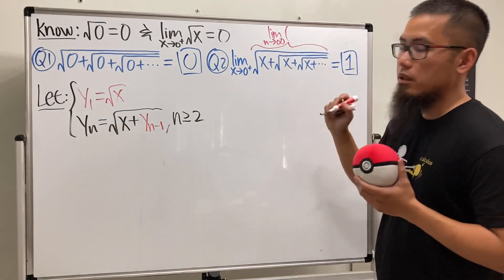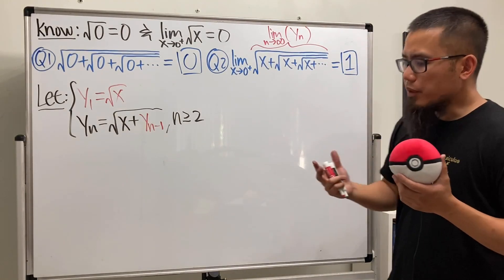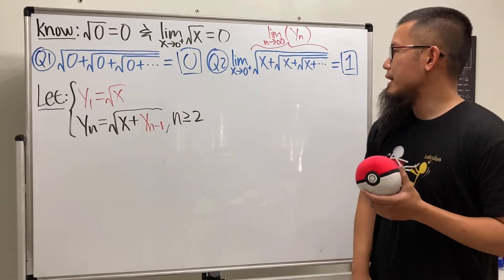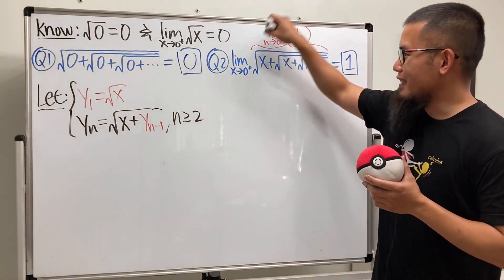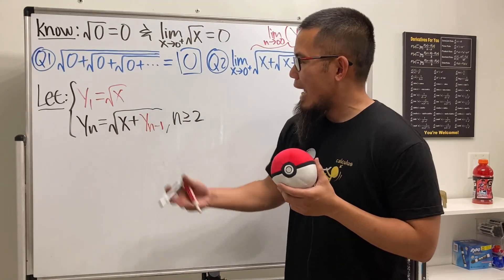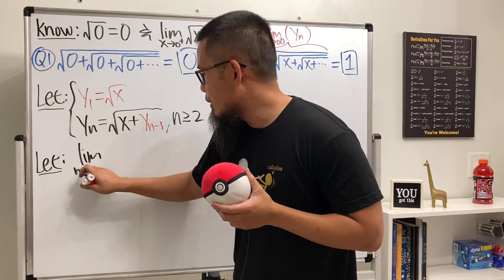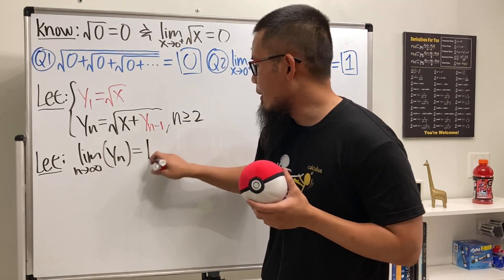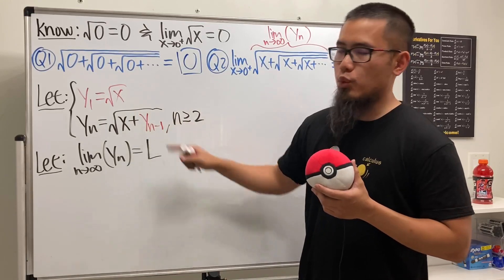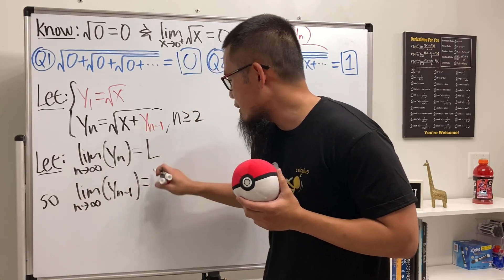We want infinitely many nested square roots, so the strategy is: if we can find a closed-form expression for lim(n→∞) yₙ in terms of x, then we can just take the usual limit. Since this is a limit of a limit question, we must be careful. The standard approach: let L = lim(n→∞) yₙ. If yₙ → L, then yₙ₋₁ also goes to L.